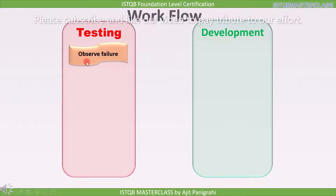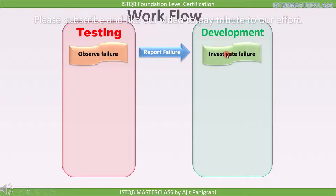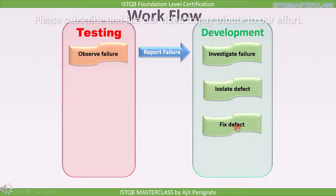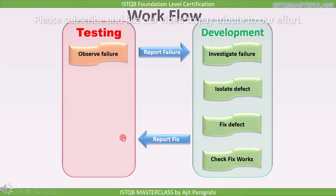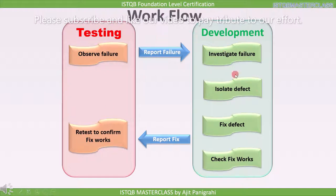Now we will understand how tester and developer work with respect to the defect cycle. First, the tester finds the defect, which is then reported to the development team. After receiving the defect report, the development team starts investigating the failure. The developer isolates the defect from the rest of the software, fixes it, and checks if it is fixed. Once fixed, a fixed report is sent to the testing team, who retests to confirm the defects are really resolved.